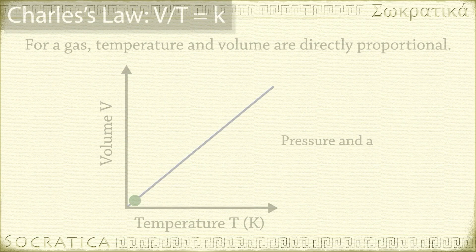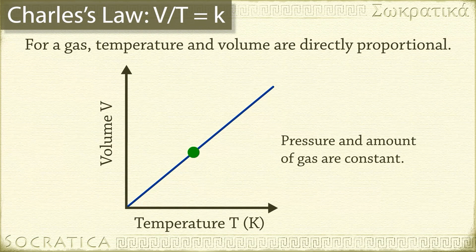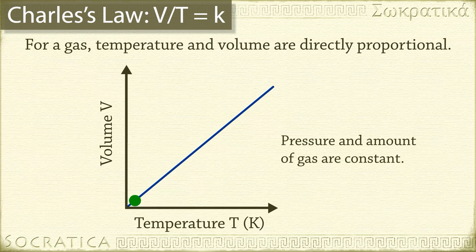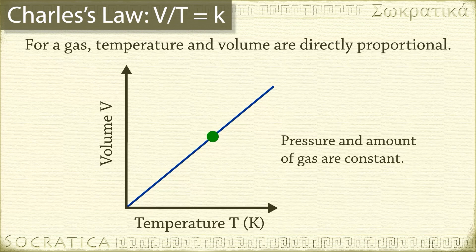Here's Charles' law, which is the relationship between volume and temperature: V over T is a constant. These two variables are directly proportional. The volume of a gas decreases when the temperature falls; if you raise the temperature, the gas expands and the volume increases. These two variables move in the same direction, so it's a direct relationship. Notice that pressure and the number of gas particles aren't part of this equation — pressure and number of gas particles are constant.